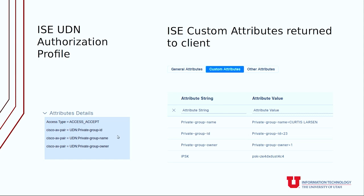Here's an example of the UDN authorization profile that gets returned in ICE. You can see there are multiple variables. The important one is the private group ID — 23 — which gets assigned to both of the user's devices. That's how the controller knows to allow multicast to those devices but not to others.